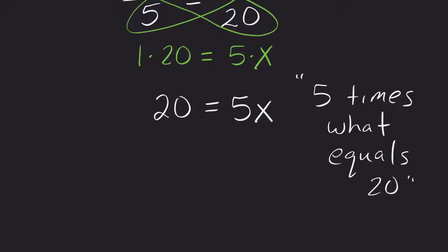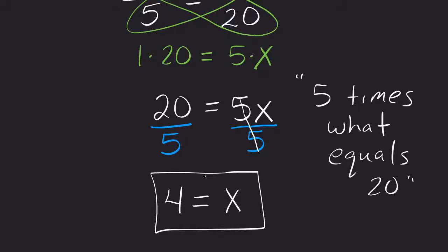Well, how do we undo multiplication? We can just go ahead and divide both sides by 5. And if we do that on this side, we get 20 divided by 5, which is 4. And the 5s here reduce and just leave us our solution. So x would be equal to 4.